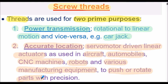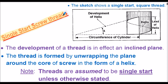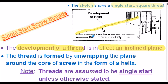Let's consider a single start screw thread. The sketch here shows the single start screw thread effectively being unwrapped. Essentially, from the diagram above, the development of the thread in effect forms an inclined plane. This horizontal distance relates to the circumference of the cylinder in one revolution. This vertical height is termed the lead of the helix. The angle shown is the angle of the inclined plane — the angle of the helix. So the thread is formed by unwrapping the plane around the core of the screw in the form of the helix.